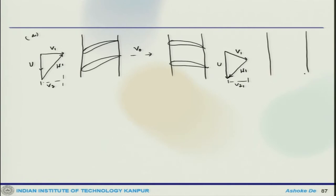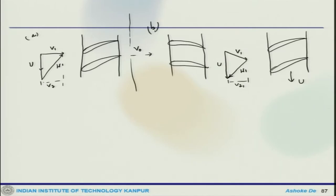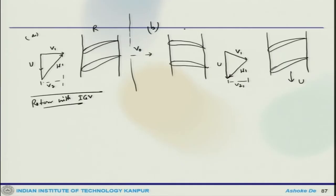These represent two different scenarios. Section A shows the rotor without IGV (inlet guide vanes), showing how the velocity triangle appears. The other case is the rotor with IGV. With the presence of inlet guide vanes, you can actually increase the rotational speed, but at the same time the tip Mach number can be kept within an acceptable limit.